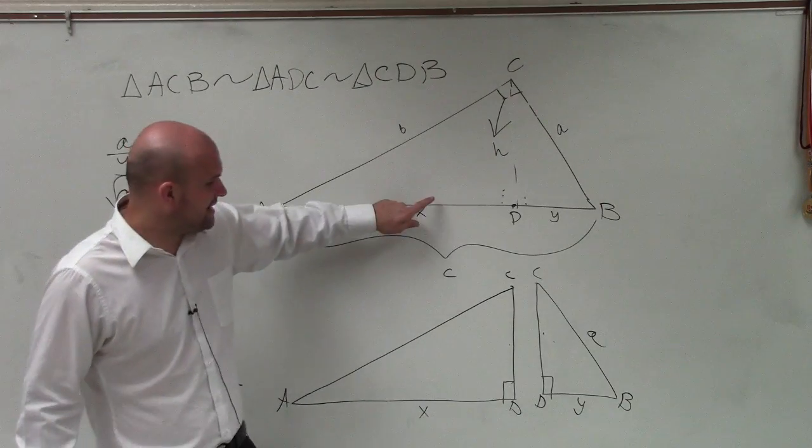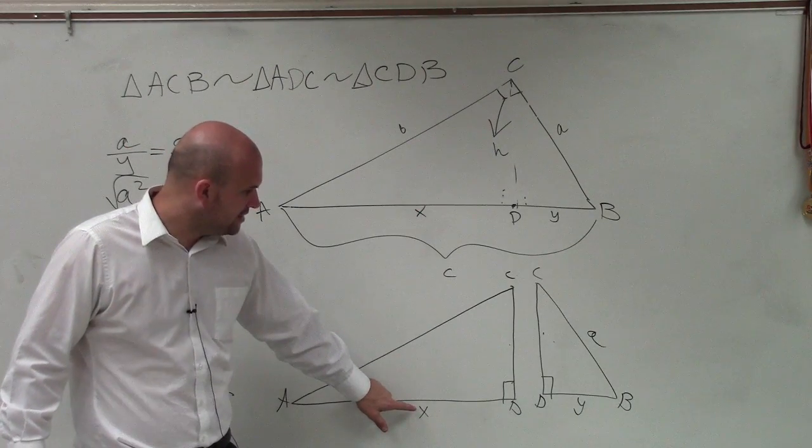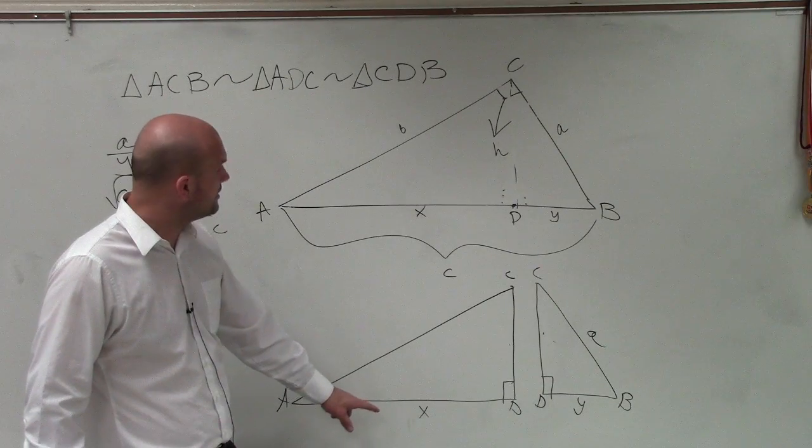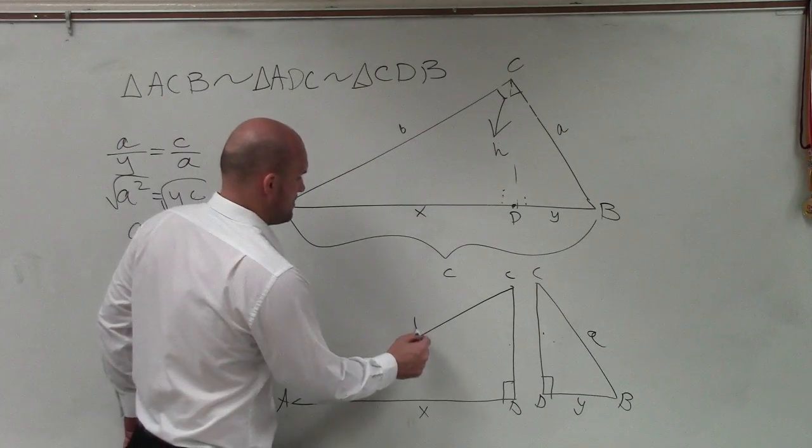So if I wanted to find x, we see that x, we can use x and—what's my other length here? I have b. C. So I can say long leg is to hypotenuse.